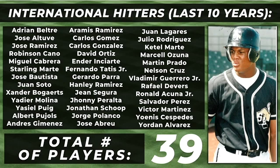The next subgroup is international hitters, with a total of 39 players having posted a five-plus WAR season over the last 10 years. Adrian Beltre and Jose Altuve lead this list with five five-plus WAR seasons, while Jose Ramirez and Robinson Cano tied for third place with four five-plus WAR seasons. There are many players in all of these subgroups, like Miguel Cabrera, who would have had more five-plus seasons if my data had gone back further than 10 years, which is also something to keep in mind.